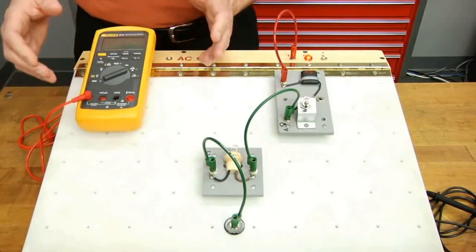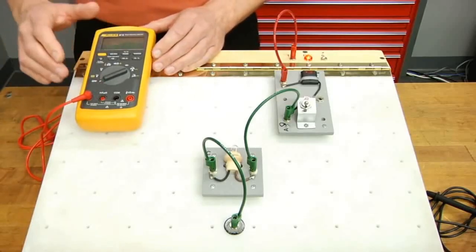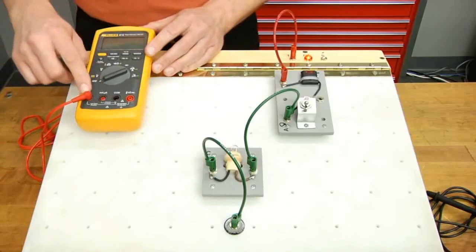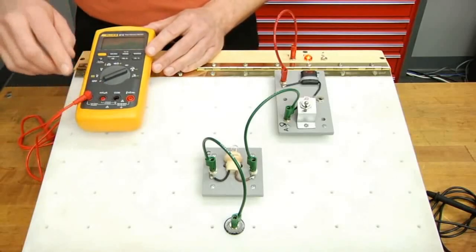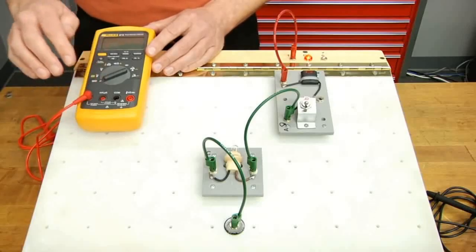If we're measuring a lower current circuit, we can move the lead over to the milliamp scale. However, it's important to always start at the amp scale. That way, if the current exceeds the 400 milliamp fuse rating, we don't blow the fuse.